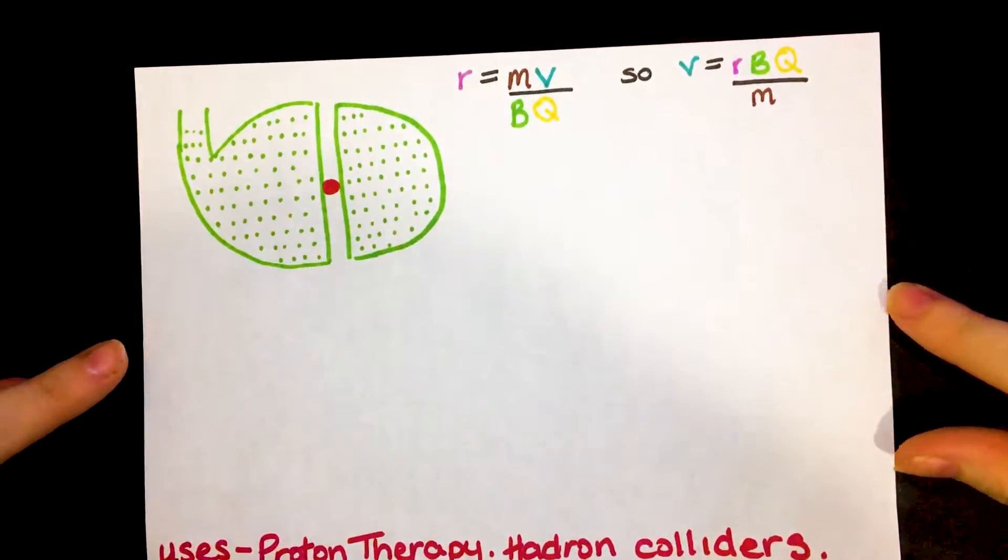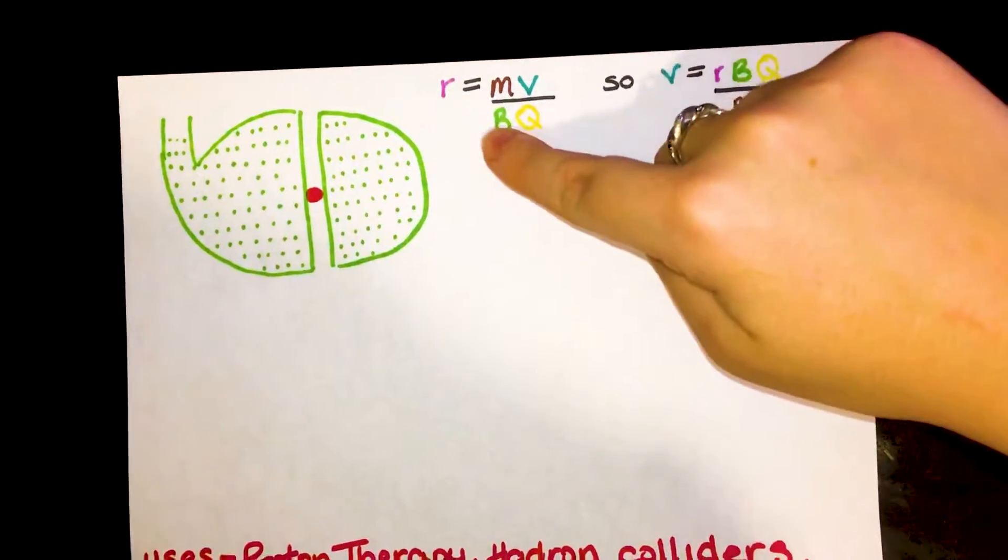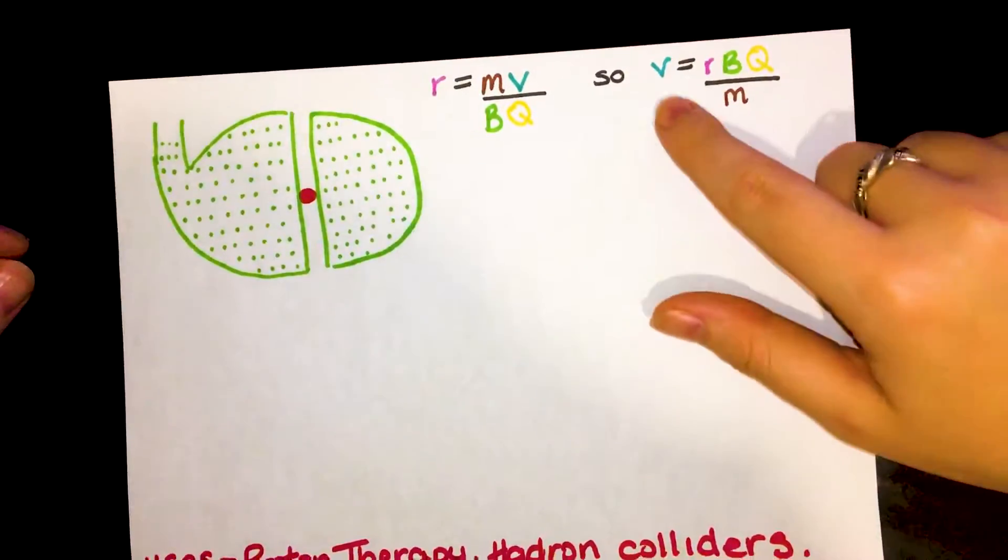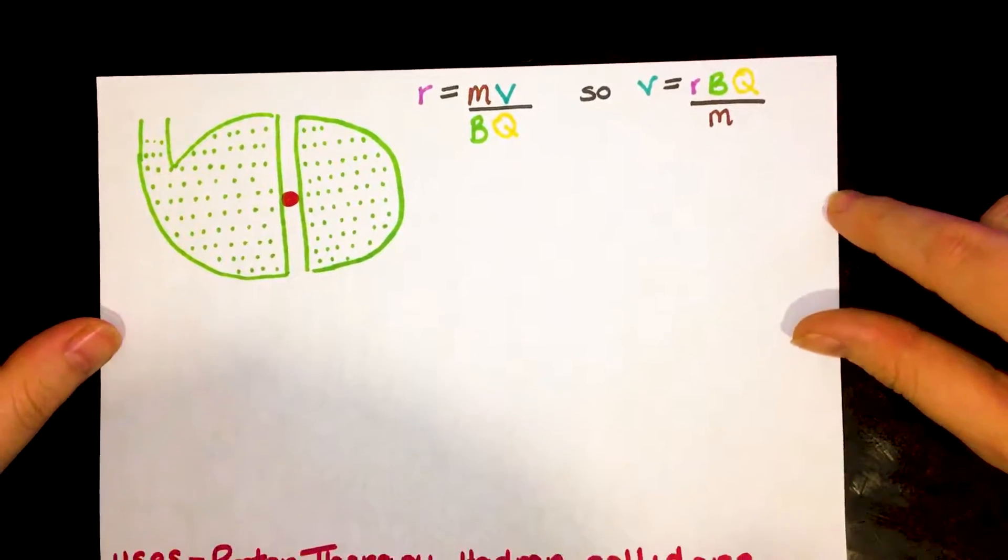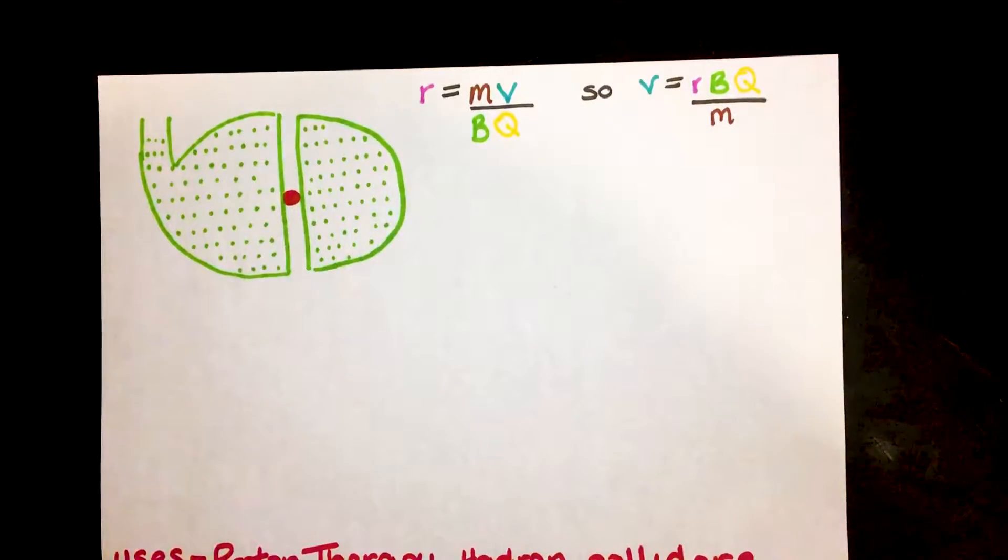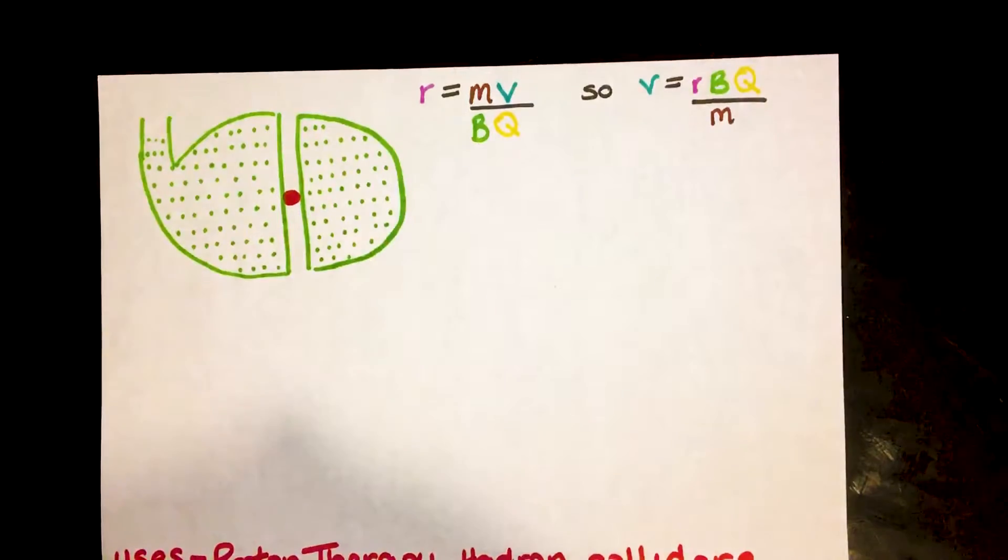So if we have a quick look, remembering our equation from before, this one here, I've rearranged it so that we have V as our focus basically. V is the radius times by the magnetic field times by the charge but divided by the mass.